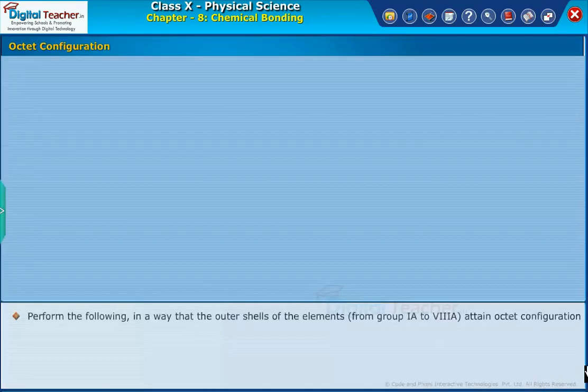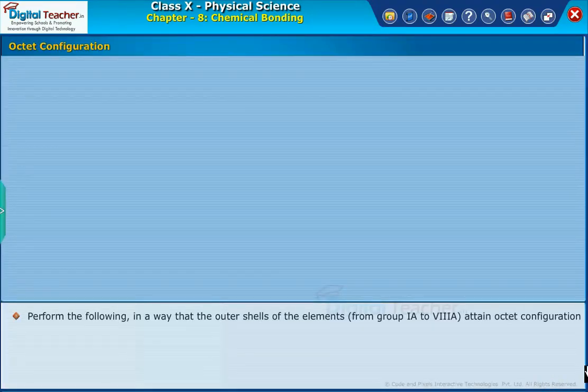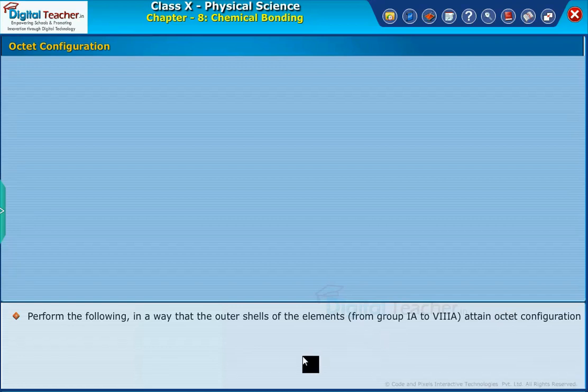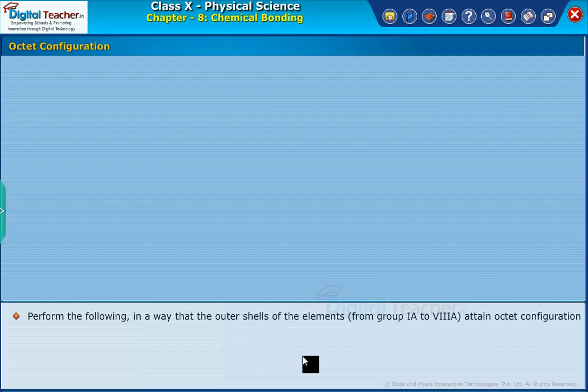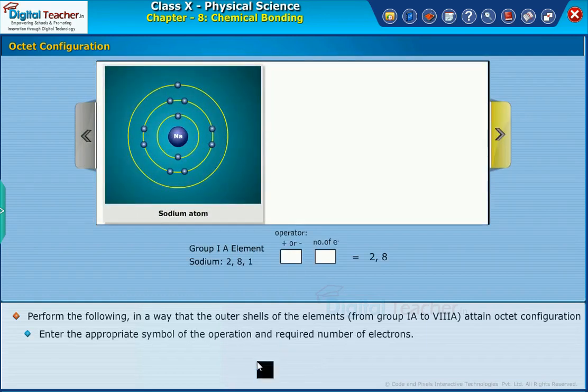Perform the following in a way that the outer shells of the elements from group IA to VIIIA attain octet configuration. Enter the appropriate symbol of the operation and required number of electrons.